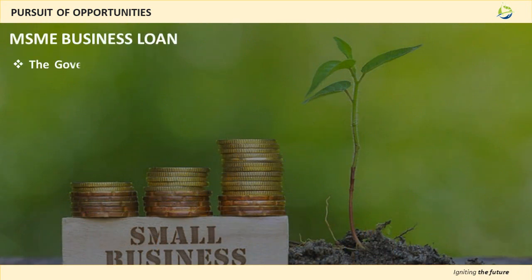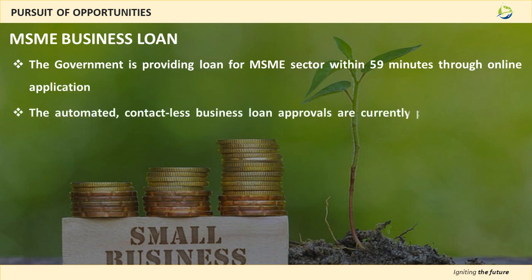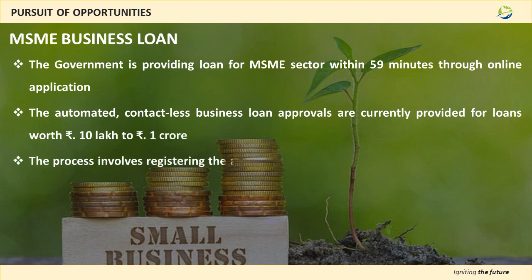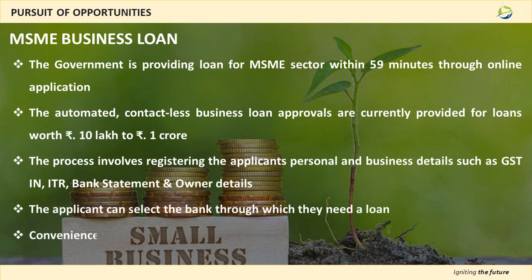MSME Business Loan. The interesting thing about this loan is that within 15 minutes you can apply for a loan online. The amount granted through this loan is between Rs 10 lakhs to Rs 1 crore. The process involves registering business details such as GST identification number, income tax return, and bank statement with owner details. Through this process one can select the bank through which they want the loan, with a processing fee of Rs 1,000. All the detailed information is available on the official website, which we have provided in the description box.